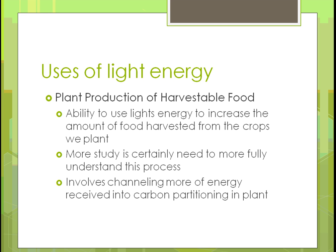For the production of harvestable food, it's about using light energy to increase yield. Researchers are still learning about this process and need more studies to fully understand what differences in light do to crop yield — for example, how much corn is produced. It also involves carbon partitioning — how the plant uses the sugars it creates and allocates them to their best use within the plant.